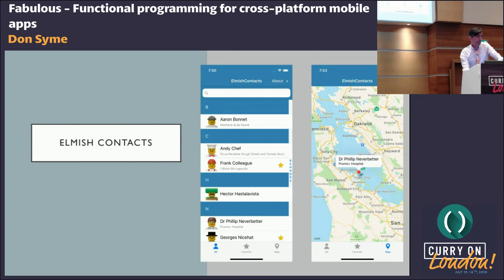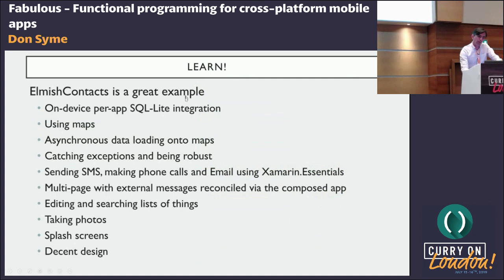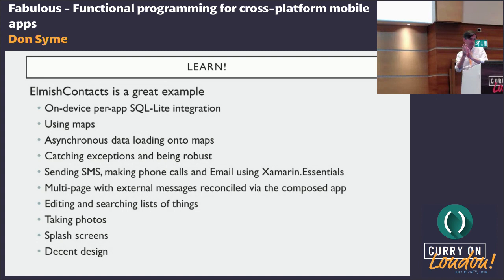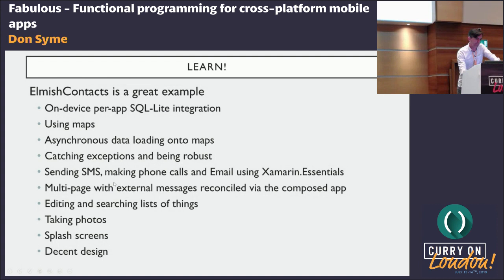Elmish Contacts is the best app to learn from for those familiar with functional programming, because that same shape I described is very visible in this app, but it's a multi-page app. It includes database integration, maps integration, asynchronous data loading onto maps, sending SMSs and making phone calls using Xamarin Essentials, editing, searching lists, taking photos, splash screens, and a decent design. Please do start there.